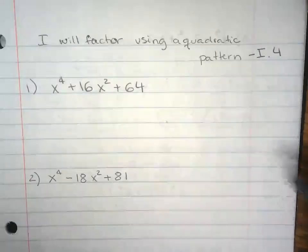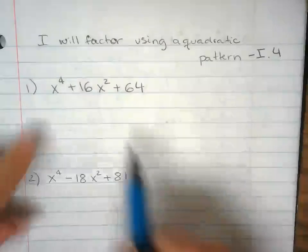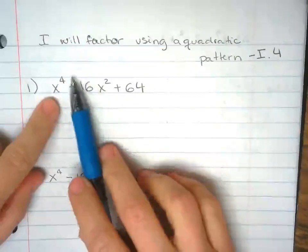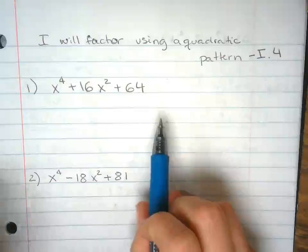We're factoring using a quadratic pattern. So when you look at this x to the fourth power, don't panic yet, it's not as bad as it looks.